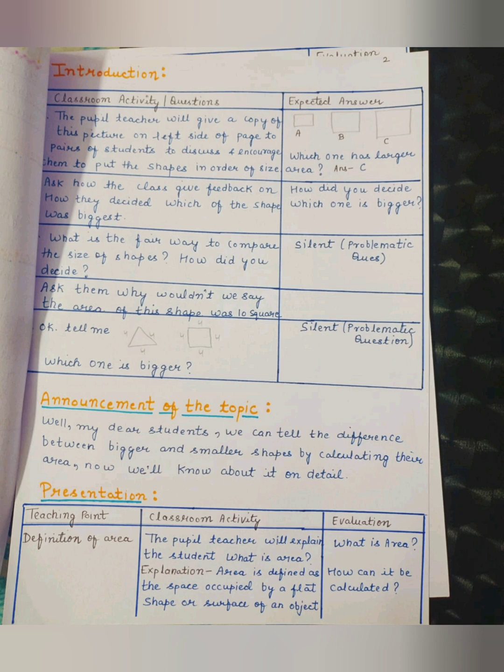Expected answer: A, B, C. Three figures. And which one has larger area? Answer is C. Ask: How did the class give feedback on how they decided which of the shape was biggest? How did you decide which one is bigger?